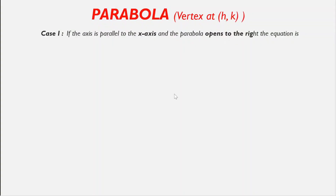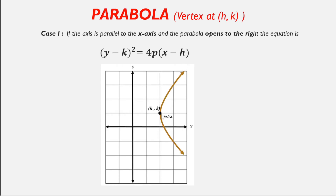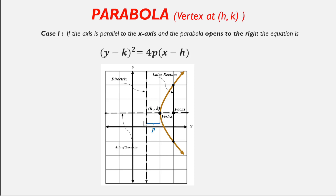Let us discuss the graph of the parabola in Case 1 whose vertex is located at (h, k). The equation in standard form is (y - k)² = 4p(x - h). The vertex is at (h, k), the focus is located to the right of the vertex, and the axis of symmetry passes through the vertex and the focus. The directrix is to the left of the vertex. The distance from the vertex to the directrix and from the vertex to the focus are both p units.